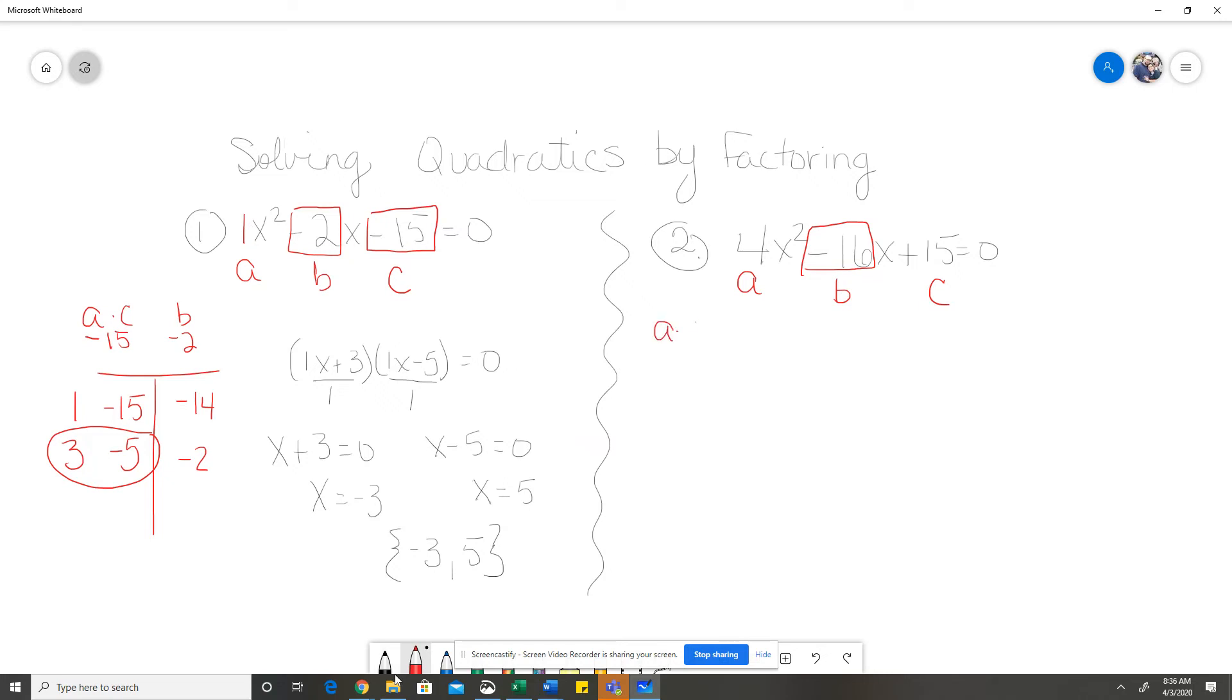So, my a times c is a positive 60. My b is a negative 16. So, I'm going to look for all my factors of 60. I have 1 and 60. I have 2 and 30. 3 and 20. 4 and 15. 5 and 12 and 6 and 10.